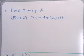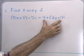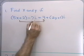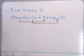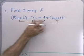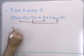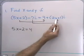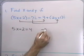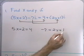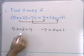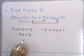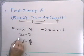We want to find x and y if this complex number is equal to this complex number. Complex numbers are equal if and only if their real parts are equal and their imaginary parts are equal. The real parts are the parts that do not contain i, so 5x plus 2 must equal 4. The imaginary parts are the coefficients of i, so negative 7 must equal 2y plus 1. Solving for x: I add negative 2 to both sides, getting 5x equals 2, then divide by 5 to get x equals 2 fifths.